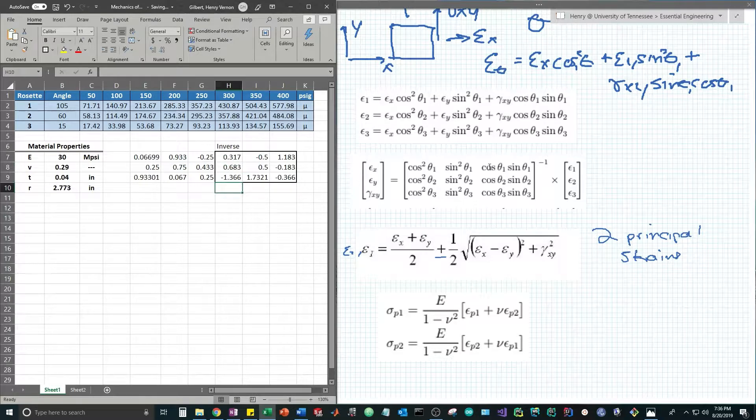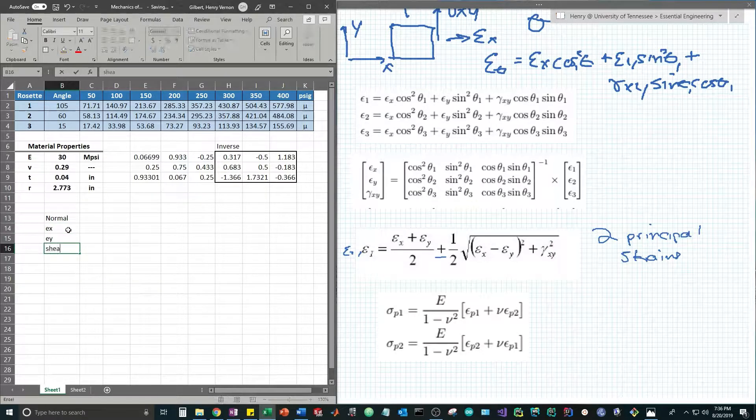Now we're going to be using the inverted matrix to plug into this matrix equation to get our normal strains. To get normal strains epsilon x, epsilon y, and shear strain gamma xy at these values of applied pressure, we simply plug and chug.